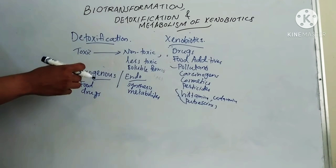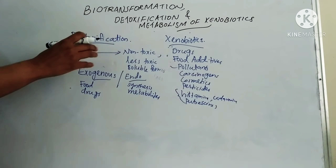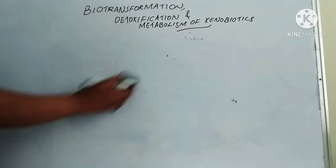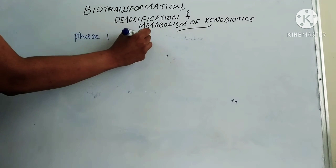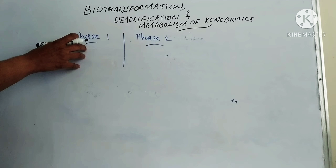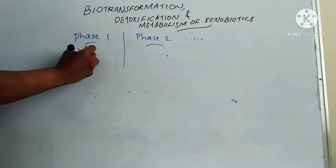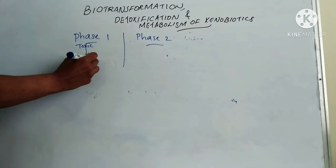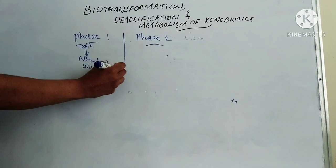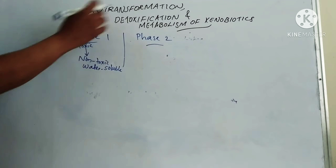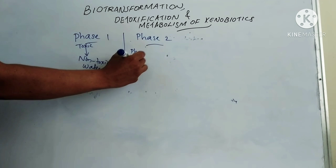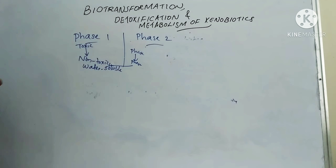The metabolism of xenobiotics is included in biotransformation. Metabolism of xenobiotics includes two phases: Phase 1 and Phase 2. In Phase 1, toxic compounds are converted to non-toxic and water-soluble forms. Some compounds require both Phase 1 and Phase 2 to be converted to non-toxic and water-soluble forms.